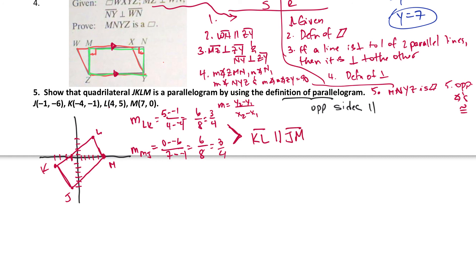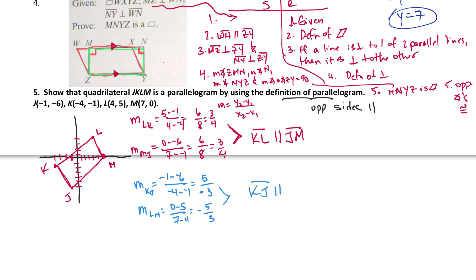Now let's find the slope from K to J: that's negative 1 minus negative 6 over negative 4 minus negative 1, which gives 5 over negative 3. And the slope from L to M: that's 0 minus 5 over 7 minus 4, which also gives negative 5 over 3. Whether the negative is on the top or bottom, the value is the same. So KJ is parallel to LM, and thus opposite sides are parallel, proving that JKLM is a parallelogram.